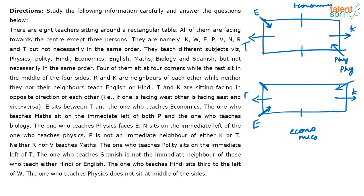Next statement: N is to the immediate left of the one who teaches physics. Looking at the first case, N has to come here — but that's not possible because K is already sitting there. So this case is wrong and must be eliminated. The correct case is the other one. So now N is sitting to the immediate left of physics — N is also fixed.